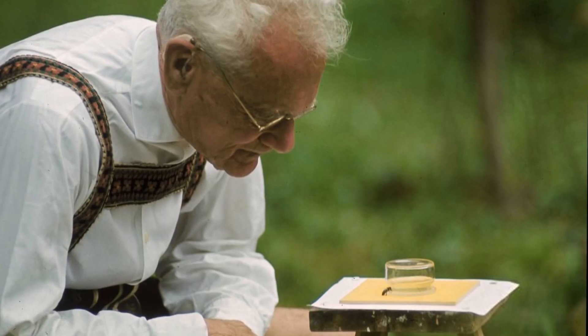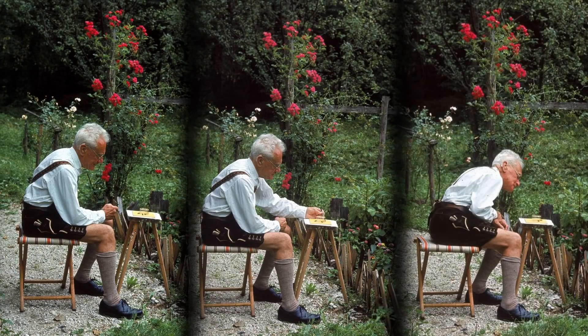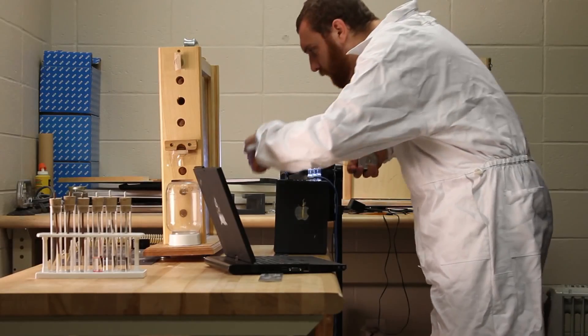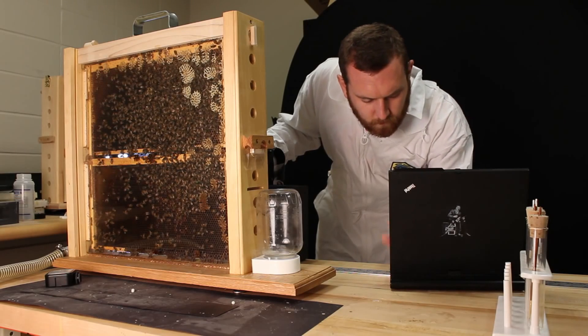To answer this question, Austrian biologist Karl von Frisch devised a series of experiments in the 1940s. Researchers at Georgia Tech have reproduced von Frisch's pioneering experiments using a modern observation hive.